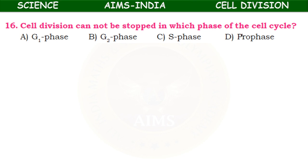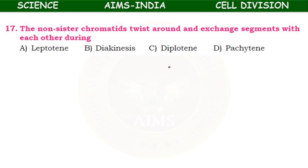Cell division cannot be stopped in which phase of the cell cycle — G1 phase, G2 phase, S phase, or prophase? The answer is S phase, the synthetic phase.